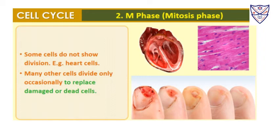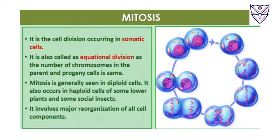Mitosis is a cell division that occurs in somatic cells — all cells of the body other than sexual cells. It is called an equational division because the chromosome number in the parent cell and in the progeny remains the same; we start with 23 pairs and end with 23 pairs. Mitosis generally occurs in diploid cells whose chromosomes are paired, but it also occurs in haploid cells of some lower plants and certain social insects. It involves major reorganization of the cell components.